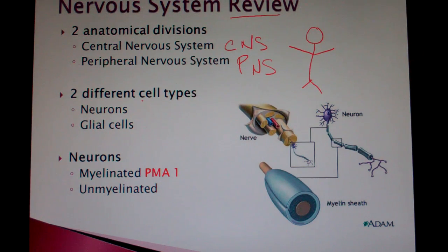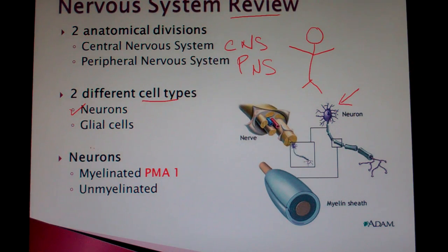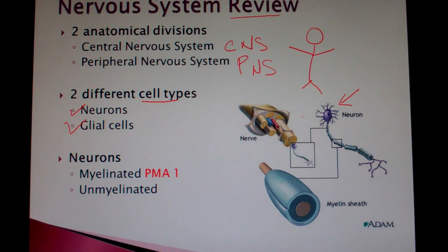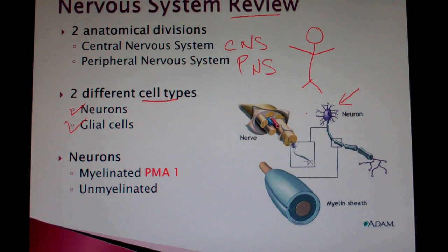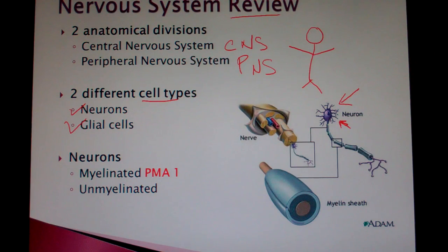You have two different cell types: neurons and glial cells — as in neural glial cells. When talking about a neuron, you're less often talking about the cell body or soma of the neuron; usually you're talking about the axon as it carries signals away. We'll get into that as we need to.